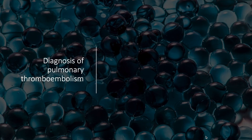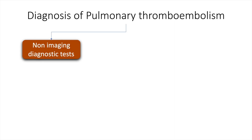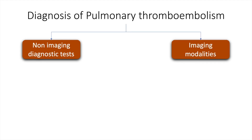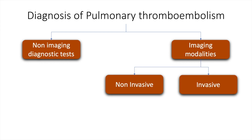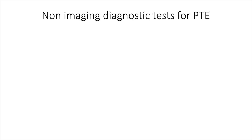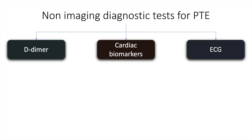The diagnosis of pulmonary embolism may be established based on non-imaging diagnostic tests or imaging modalities. Imaging modalities may be non-invasive or invasive. The non-imaging diagnostic tests for pulmonary thromboembolism include D-dimer, cardiac biomarkers, and electrocardiogram.